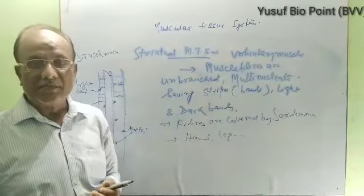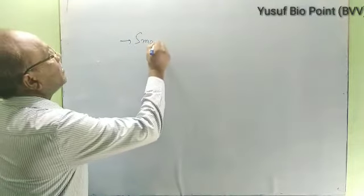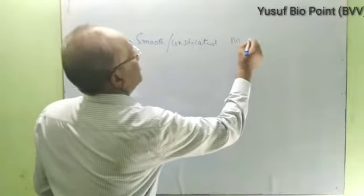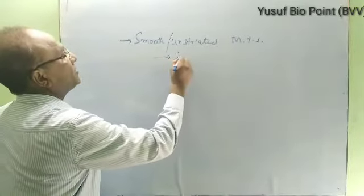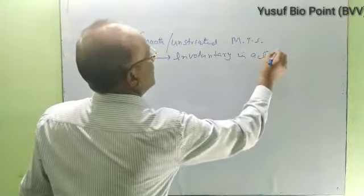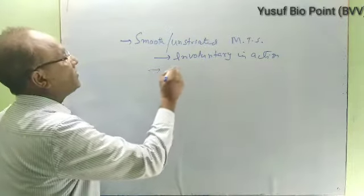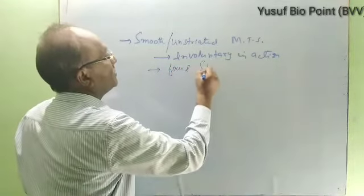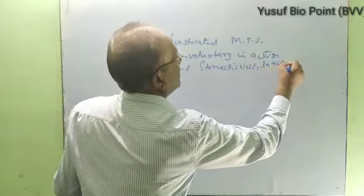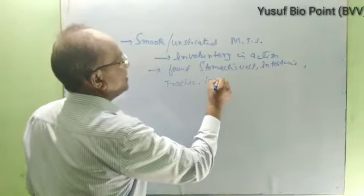Striated muscles are voluntary, meaning they move according to our wish. They are found in the hands and legs — the parts which are under our control. Now the smooth or unstriated muscular tissue system: these muscles do not move according to our will. They are found in the stomach wall, intestine, trachea, and lungs.